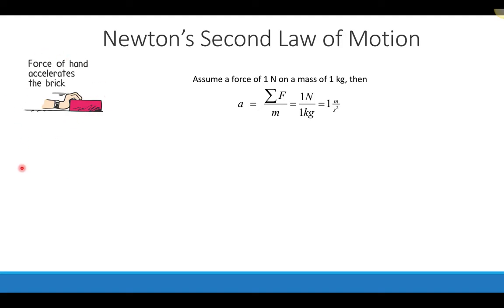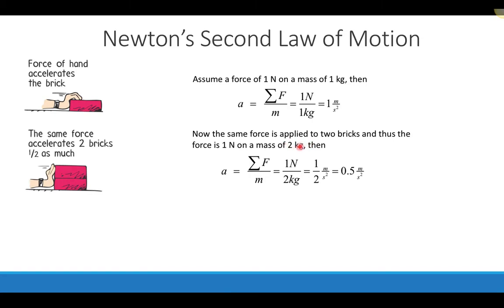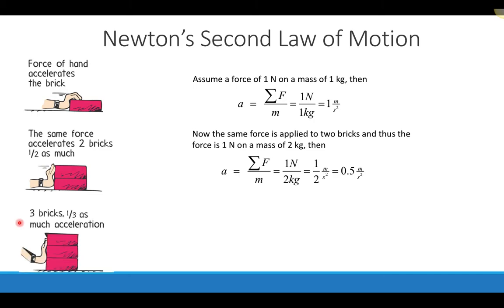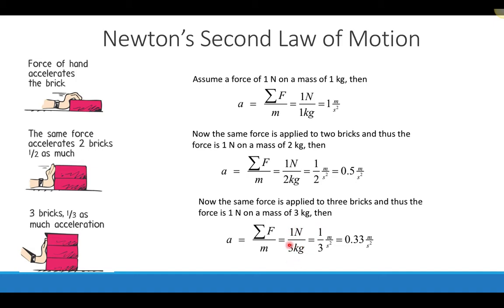With three bricks and the same one-newton force, the acceleration reduces to one-third of a meter per second squared — one-third of the original. Three times as much mass causes the acceleration to decrease by a factor of three. Remember, as you see questions asking what happens to one quantity if you double another, you can always plug in easy numbers like one, figure out the value, then change the variable and see what happens.